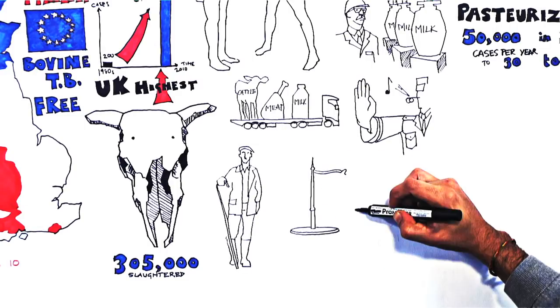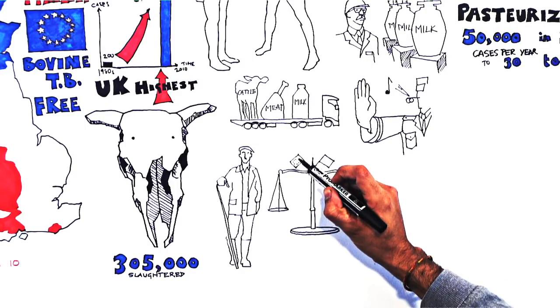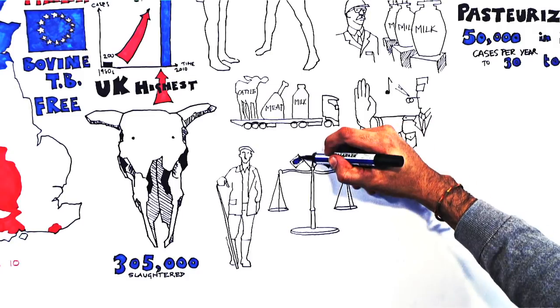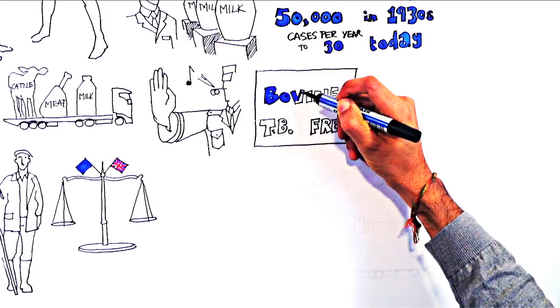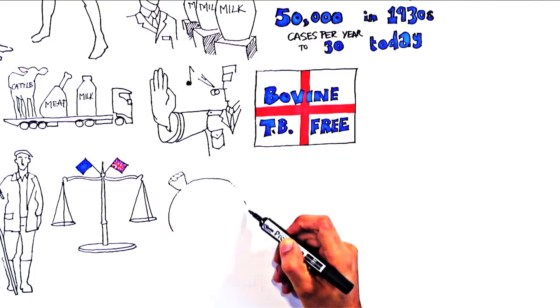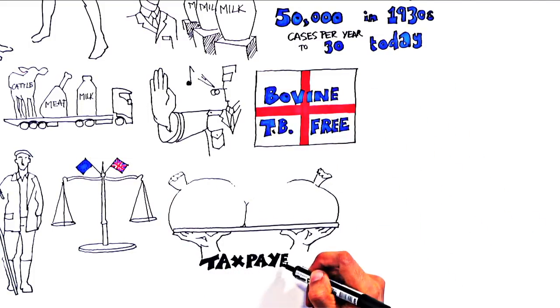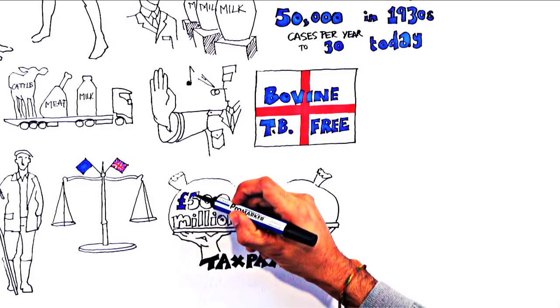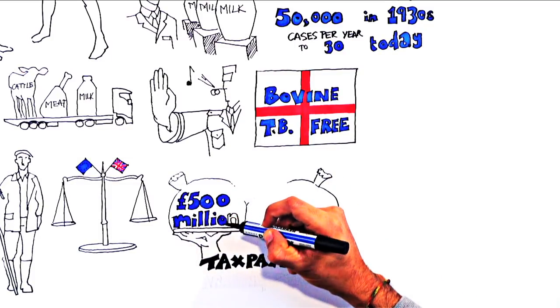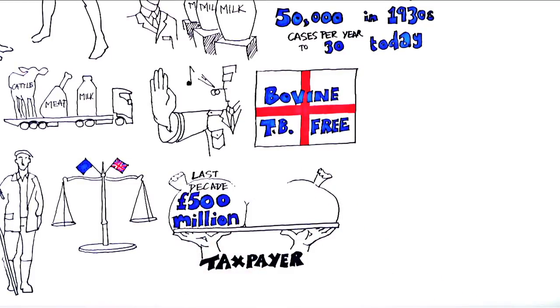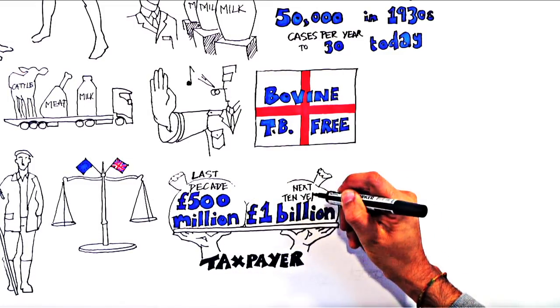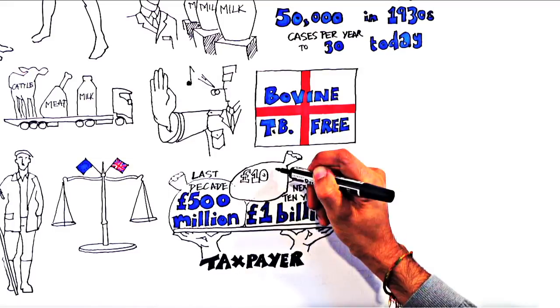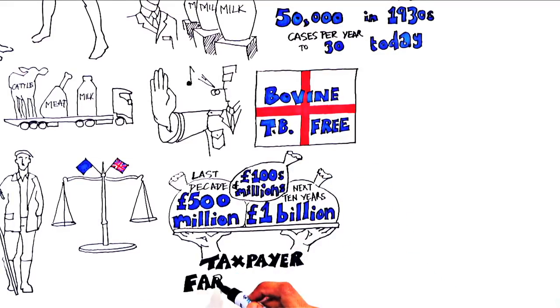For these reasons, and to protect human health, there are legal controls in place, including those at an EU level. Achieving bovine TB free status for England will reduce the cost to the taxpayer of controlling the disease, which reached £500 million over the last decade and is estimated to reach more than £1 billion over the next ten years, plus hundreds of millions more to the farming sector.